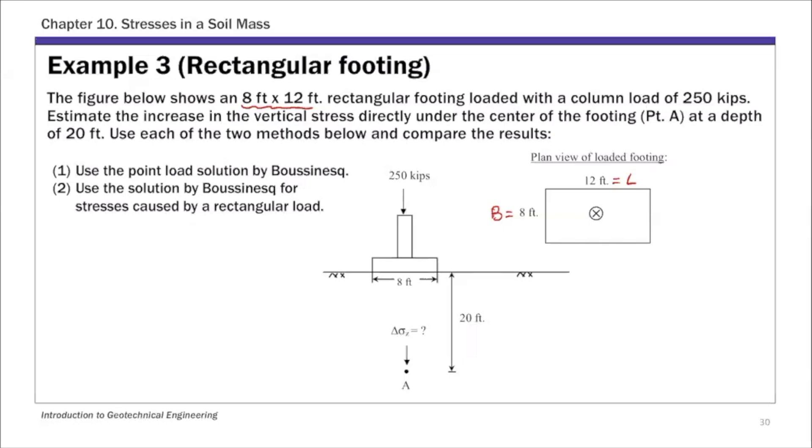We have this rectangular footing with a load of 250 kips, or 250,000 pounds. We're going to estimate the increase in vertical stress directly under the center of the footing at point A, at a depth Z of 20 feet. For this example, let's calculate the stress increase using both the point load solution and the rectangular solution, then compare how good the point load approximation is.